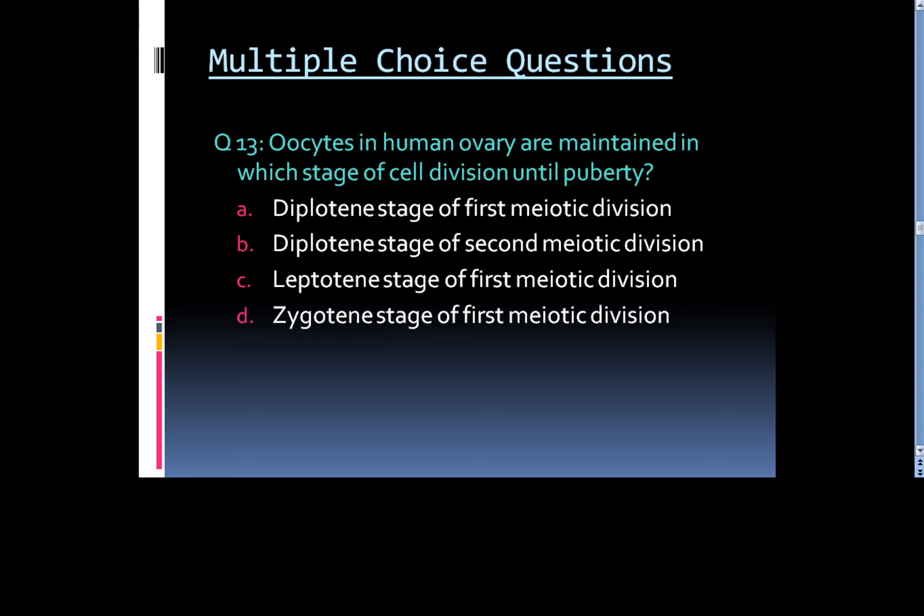Question 13: Oocytes in human ovary are maintained in which stage of cell division until puberty? Option A. Diplotene stage of 1st meiotic division, Option B. Diplotene stage of 2nd meiotic division, Option C. Leptotene stage of 1st meiotic division, or Option D. Zygotene stage of 1st meiotic division.